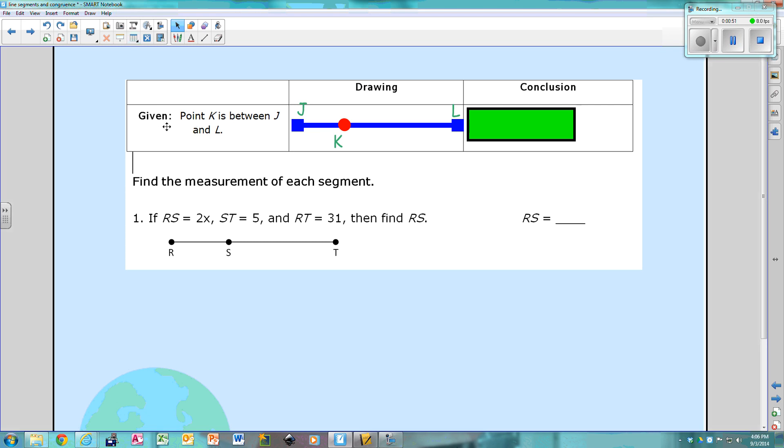Given, so if they give you a segment, give you a statement, point K is between J and L. So then you would draw segment J, L, and you would put point K in between. The conclusion would be that JK, this piece, plus KL, this piece, equals JL, the whole piece. So that is the conclusion that you're going to need to make sure that you can make each time, and I'm going to ask you for that on your paper.